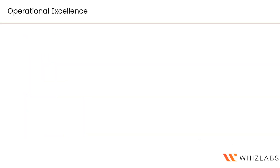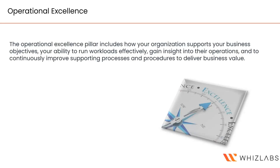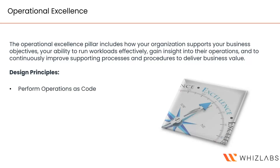The operational excellence pillar gives direction on how your organization should support your business objectives and how the workload running on AWS will be effective and efficient. As part of running this architecture, there will be various operations to perform — such as backup, disaster recovery, or issue resolution. The operational excellence pillar helps you gain insights into all of these, resulting in continuously improved support processes and procedures that deliver more business value.